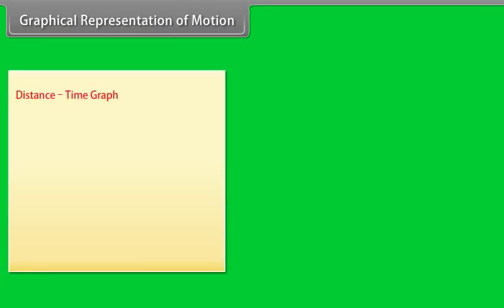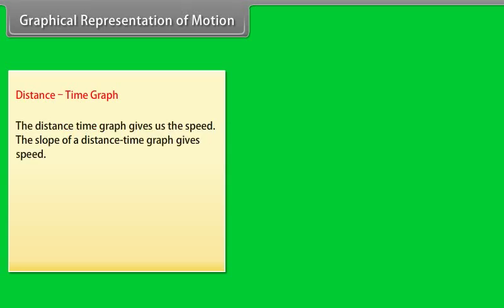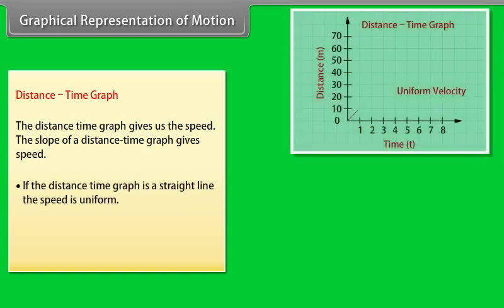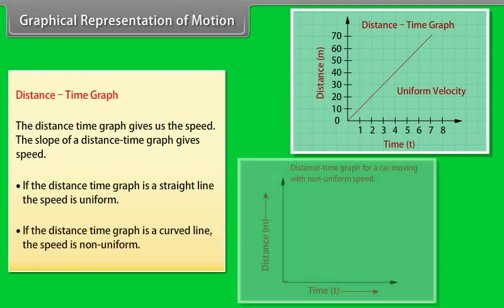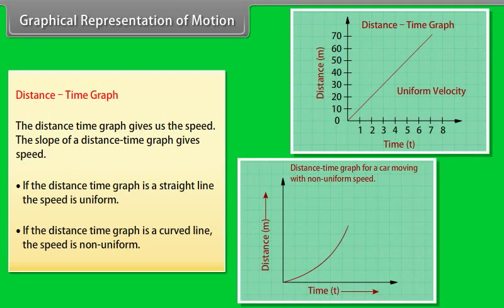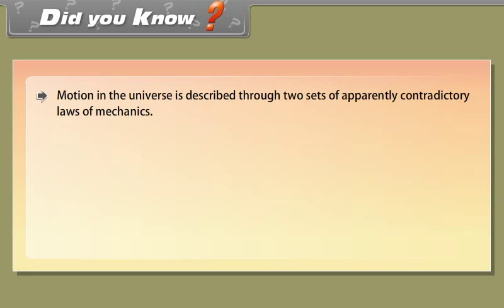Graphical representation of motion — Distance-time graph: The distance-time graph gives us the speed. The slope of a distance-time graph gives speed. If the distance-time graph is a straight line, the speed is uniform. If the distance-time graph is a curved line, the speed is non-uniform.